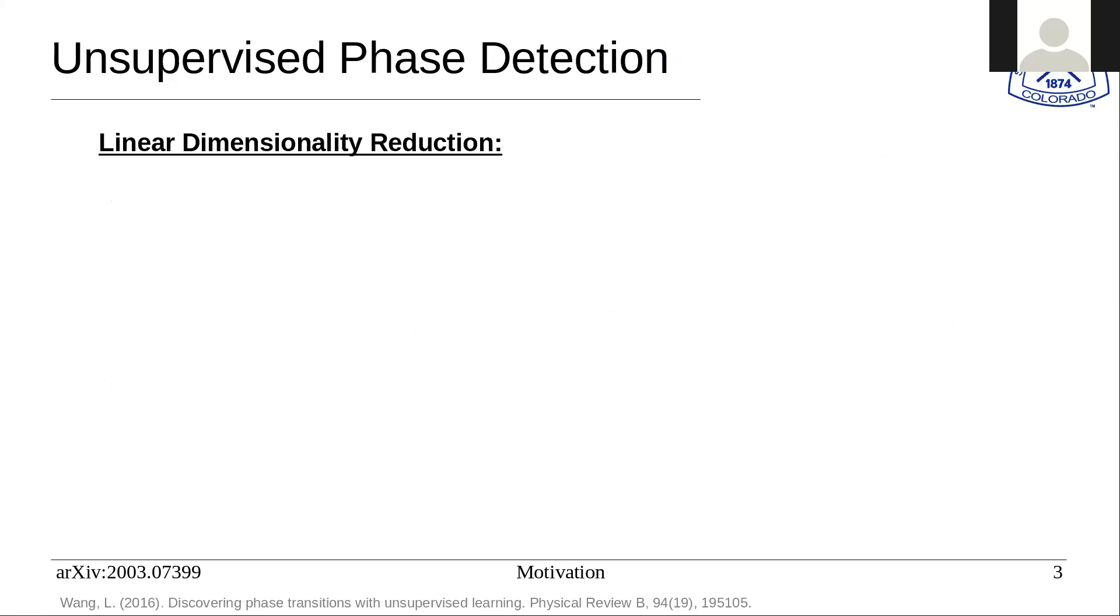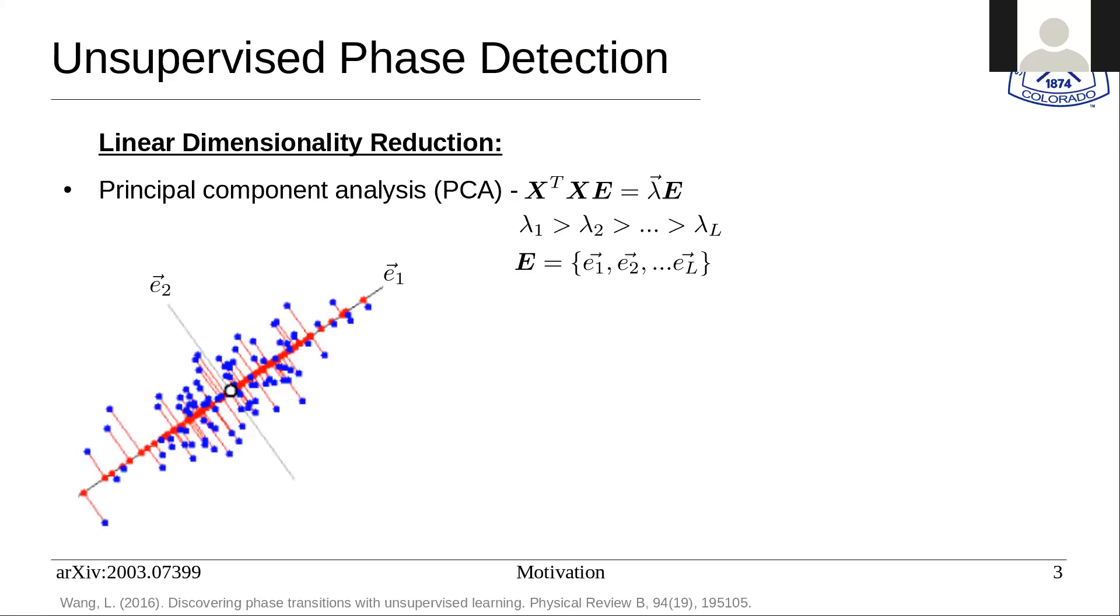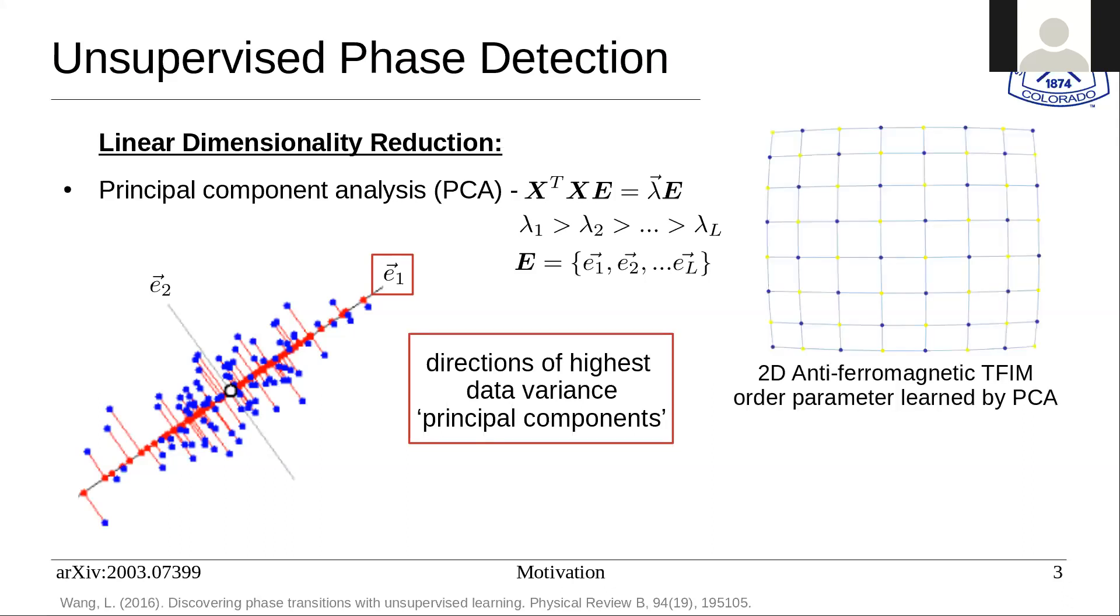First, let's talk about linear dimensionality reduction in one commonly used method, principal component analysis or PCA. It's the eigenvalue equation of the covariance of the data. Here X is the data set and it's sets of these classical bit strings at different parameter values. You organize these in descending eigenvalues and eigenvectors. PCA finds the directions of highest data variance and these are the principal components. You can project the data onto these eigenvectors to retain as much of the variance and information as possible for a linear transformation.